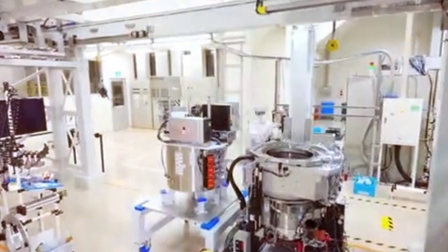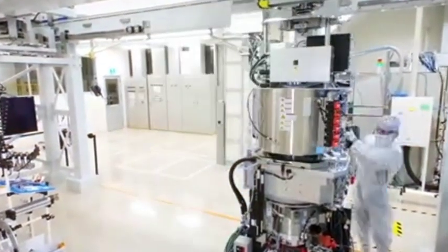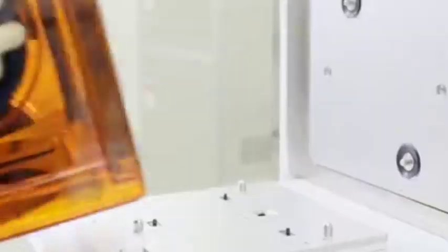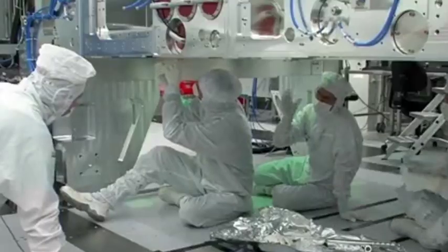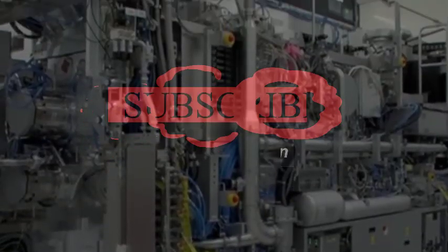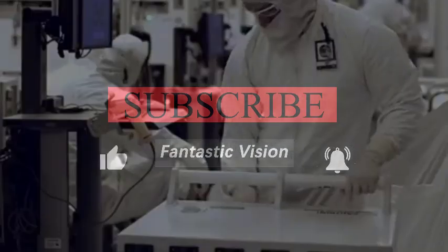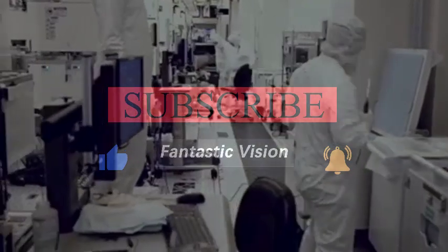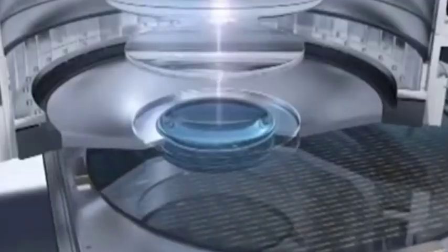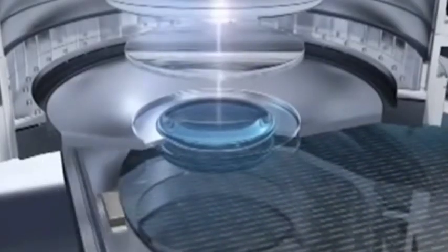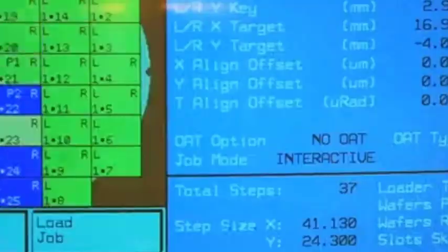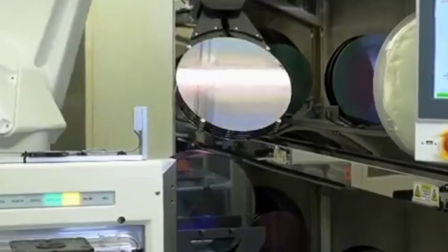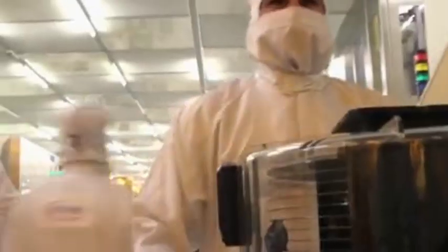Only the most advanced lithography machines will be involved. ASML's definition of most advanced is TwinScan NXT 2000i and above models. That is to say, only TwinScan NXT 1980di and below models can be shipped normally. According to ASML's official website, TwinScan NXT 1980di lithography process is less than or equal to 38 nanometers.